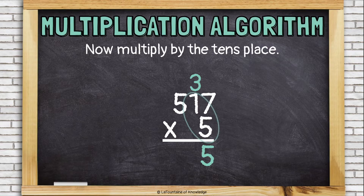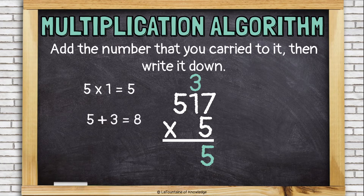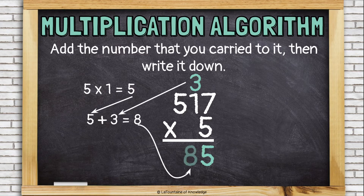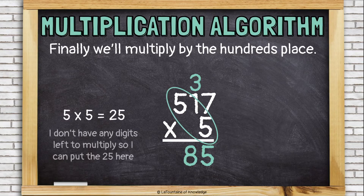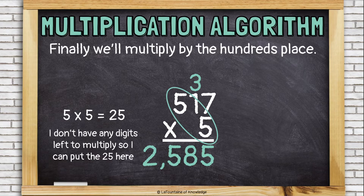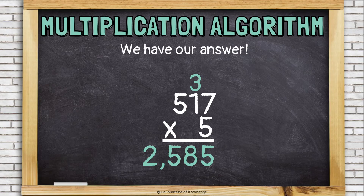Now, I'm going to multiply the 5 times the 1, which is 5. But before I write that down, I have to remember to add the 3 to it — that number that I carried. 5 plus 3 is 8. And I have one more digit to multiply. I'm going to multiply the 5 times the 5, which is 25. And I don't have any digits left to multiply, so I can go ahead and put the 25 down here in my answer. So I can just put the 25 down, throw a comma in there, and I see that my answer is 2,585.